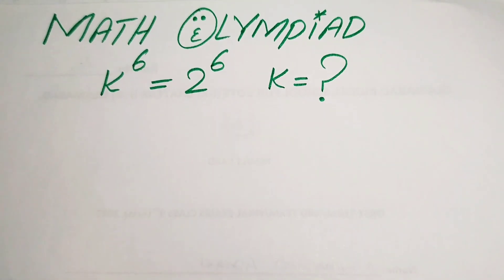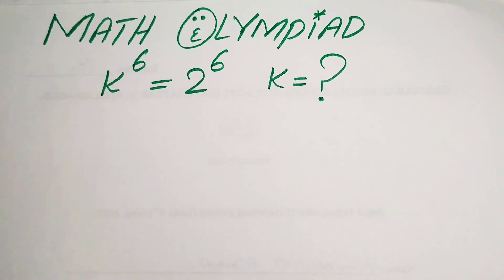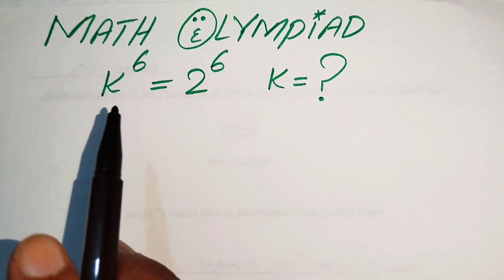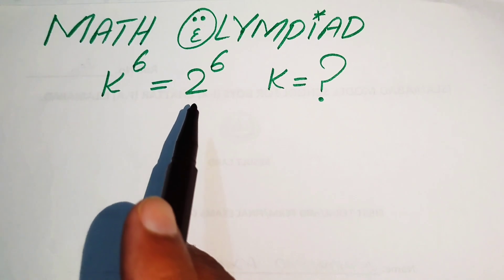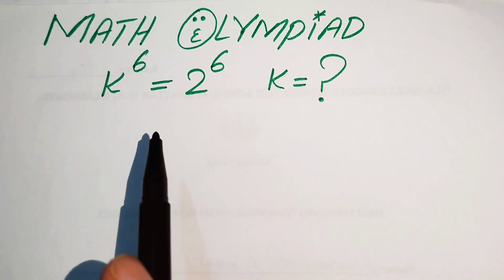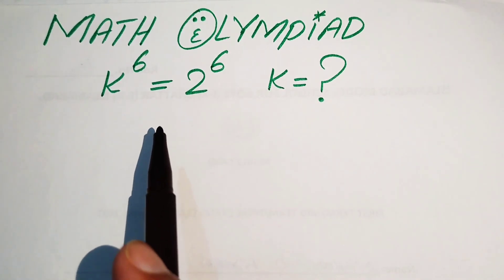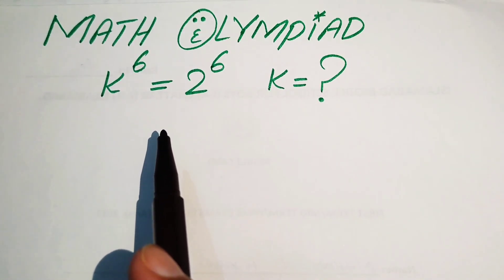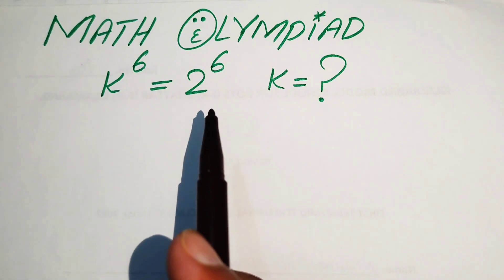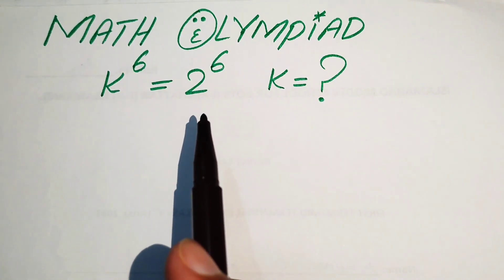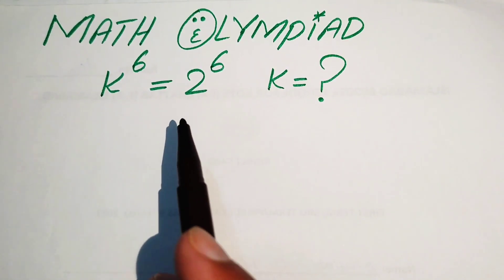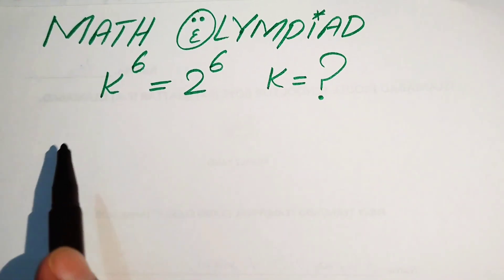Hello everyone, welcome. We are going to solve this algebra problem where k to the power of 6 equals 2 to the power of 6, and we need to find all the roots of this given equation. So here we find all 6 roots of this equation.